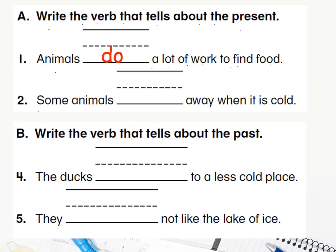Number two: 'Some animals blank away when it is cold.' Do we say 'some animals do away when it's cold' or 'some animals go away when it's cold'? I can hear you answering — we say 'go'! Amazing. Let's go to Part B.